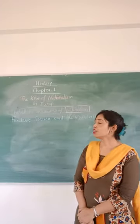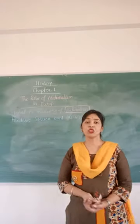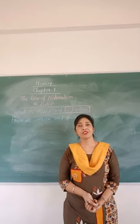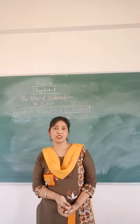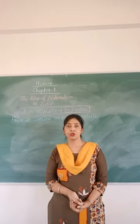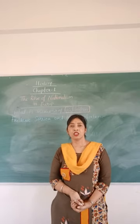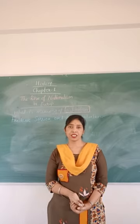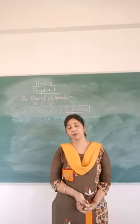Today we start our first chapter of history, named 'The Rise of Nationalism in Europe.' Chapter 1 deals with many of the issues visualized by Sorrieu, and we look at the diverse processes through which nation-states and nationalism came into being in 19th century Europe. The topics covered in this chapter are: rise of nationalism in Europe, French Revolution, nationalism, and imperialism.